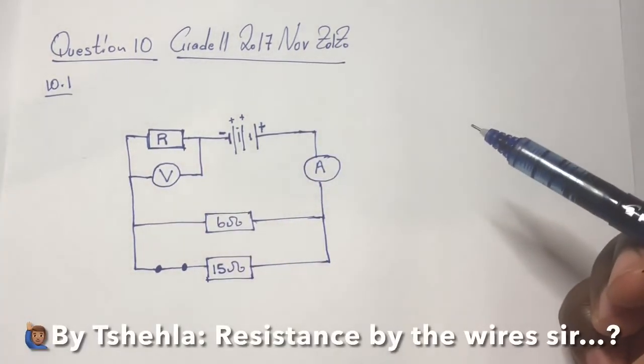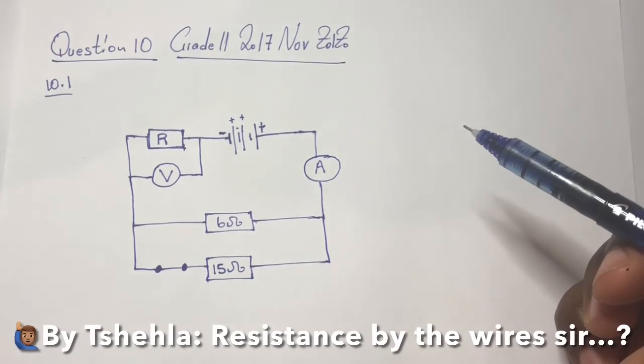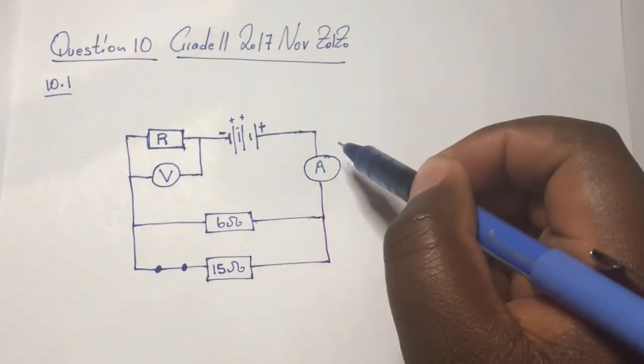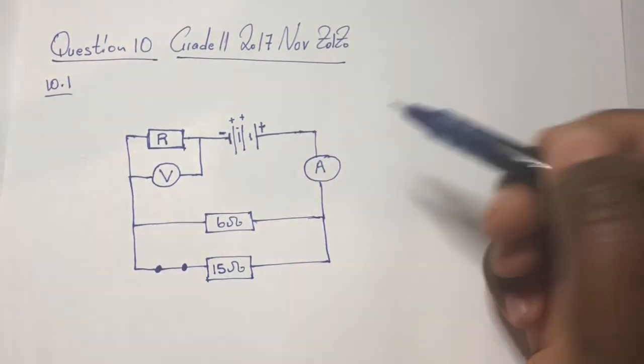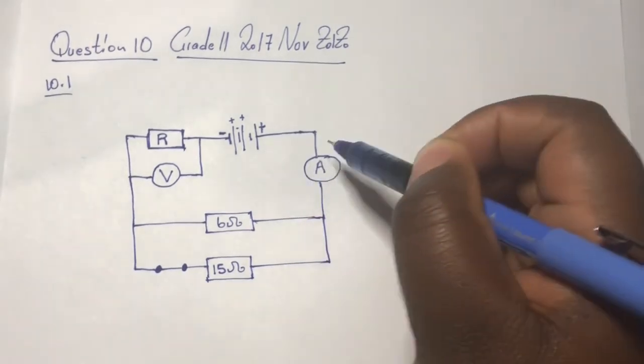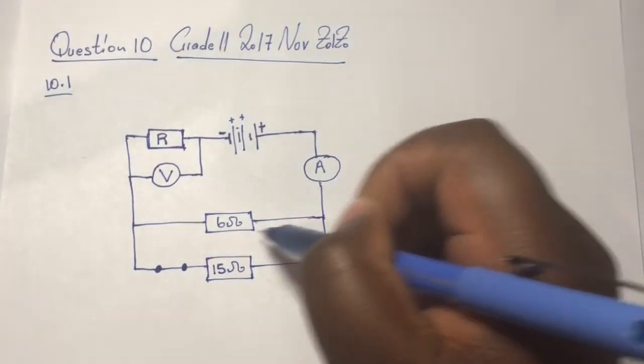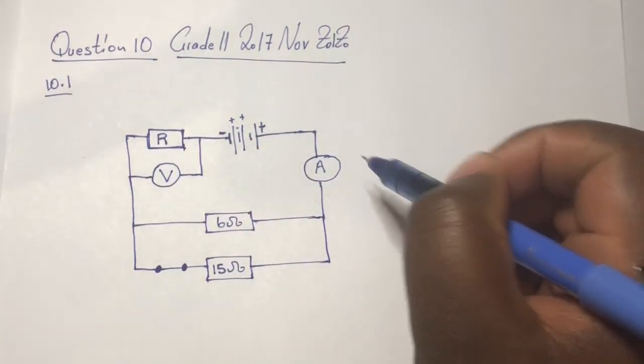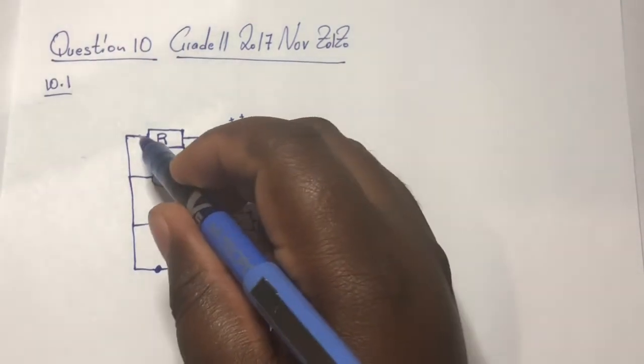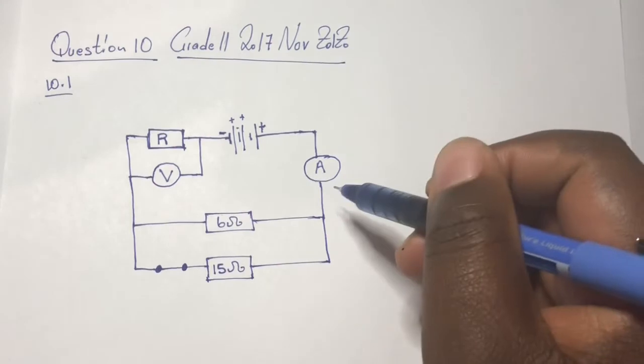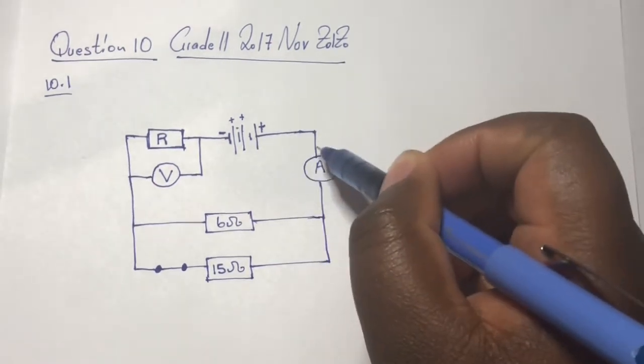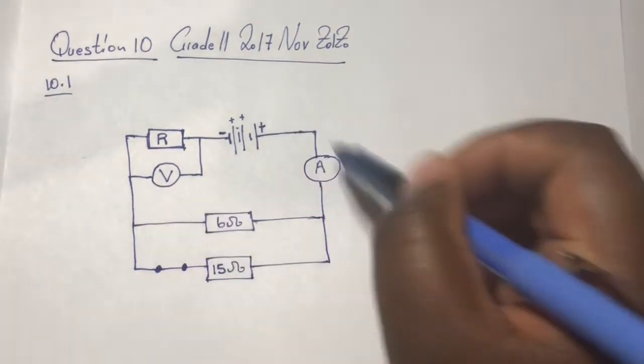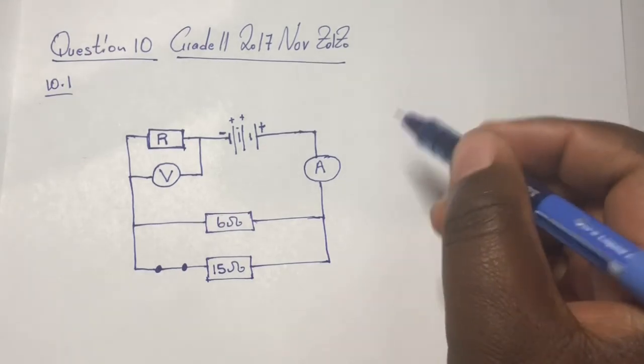I don't think there's anything that I've missed. With regards to ignoring the resistance of these wires, remember guys these wires can result in heat. So in this case we're assuming that there's no resistance as a result of heat. It means there's no heat throughout this circuit - that's what it means by ignoring the resistance of the wires.